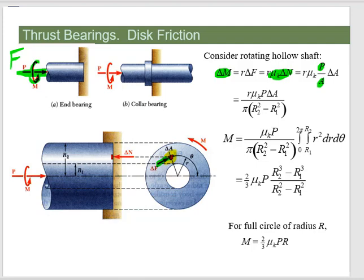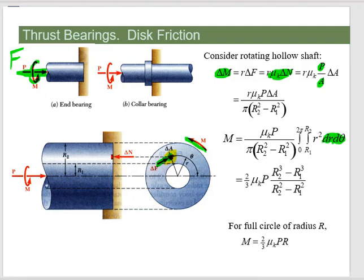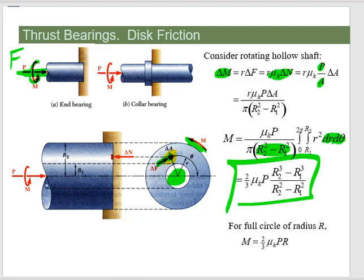We divide the force over area times the change in area and integrate over the entire area. Think about one little element of surface that has a force being pushed against it and a moment trying to turn it — we integrate that. If it has an axle in the middle, we have R1 and R2, and the area is the difference between those two radii. If it's a solid circle, we can just ignore R1. Cranking through the integral over the radius and from 0 to 2π gives us the equation for the moment.